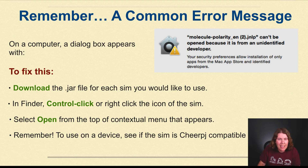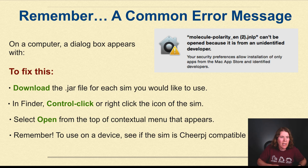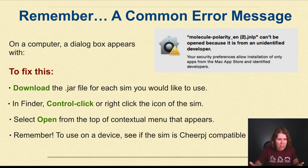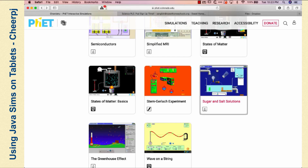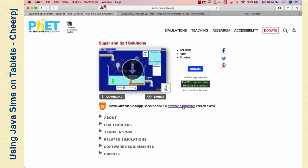That's an overview of the Sugar and Salt Solutions simulation and one way of loading a Java simulation. You might get the common error message saying it can't be opened because it's from an unidentified developer. The fix: download the file, bring it to your desktop, Control-click or right-click the icon, select Open, and it runs. They now have a better fix — CheerpJ compatibility. Let's look at how to use a sim with CheerpJ: click on the Java icon to see if it's compatible, then click 'Browser Compatible.'